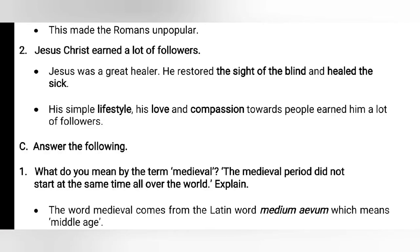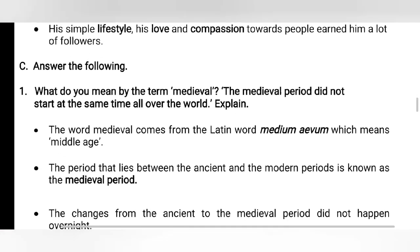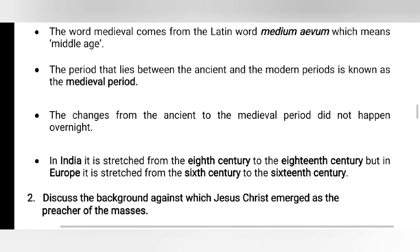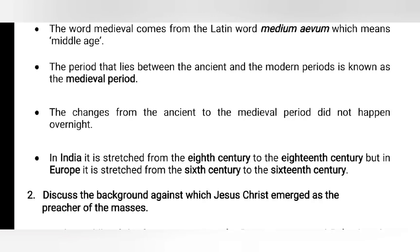Section C — answer the following long-answer questions. Question 1: What do you mean by the term 'medieval'? The word 'medieval' comes from the Latin word 'medium aevum,' which means 'middle age.' The period that lies between the ancient and the modern periods is known as the medieval period. The changes did not happen overnight — it took many years. In India, it stretched from the 8th to the 18th century, while in Europe it stretched from the 6th to the 16th century.